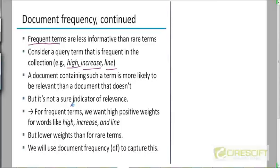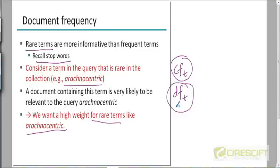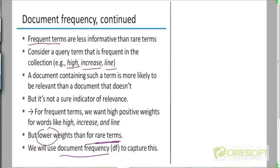When a frequent term appears in the document, we do want to give it a high positive weight, but the weight should be lower than the weight for rarer terms. Rarer terms should have a higher weight. There are two different ways to measure how frequent a term is — collection frequency or document frequency. Let's go with document frequency here, because this ends up working better than collection frequency.